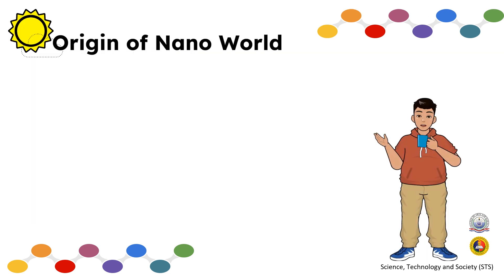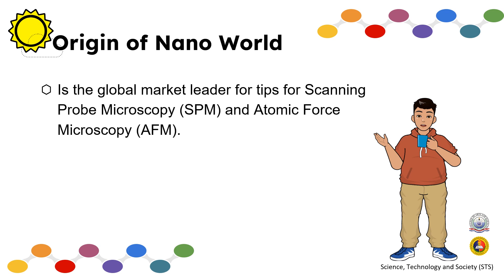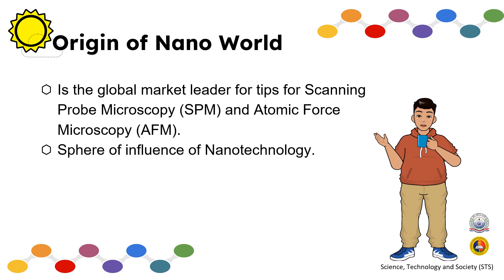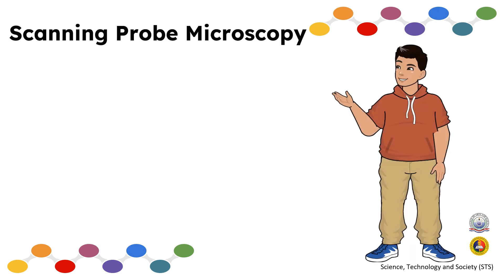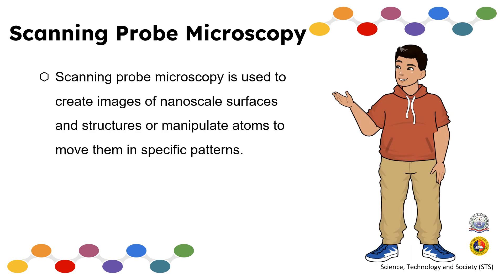Origin of the Nanoworld. The global market leader for tips for scanning probe microscopy (SPM) and atomic force microscopy (AFM) represents the sphere of influence of nanotechnology. Scanning probe microscopy is used to create images of nanoscale surfaces and structures, or to manipulate atoms and move them in specific patterns.